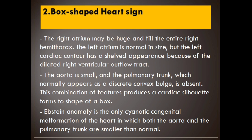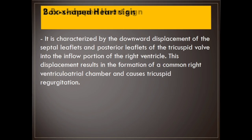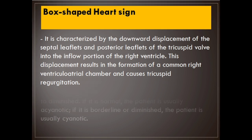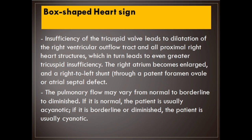Ebstein anomaly is the only cyanotic congenital malformation of the heart in which both the aorta and the pulmonary trunk are smaller than normal. It is characterized by the downward displacement of the septal and posterior leaflets of the tricuspid valve into the inflow portion of the right ventricle, resulting in a common right ventriculo-atrial chamber and tricuspid regurgitation. Insufficiency of the tricuspid valve leads to dilatation of the right ventricular outflow tract and all proximal right heart structures, which in turn leads to even greater tricuspid insufficiency.